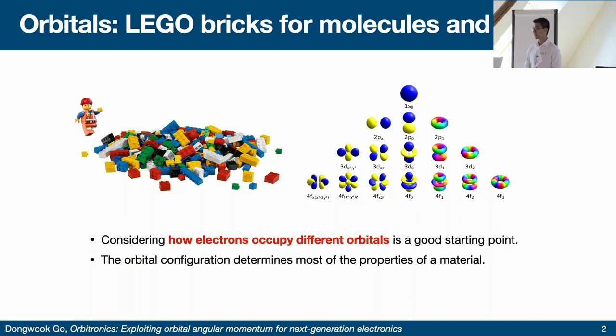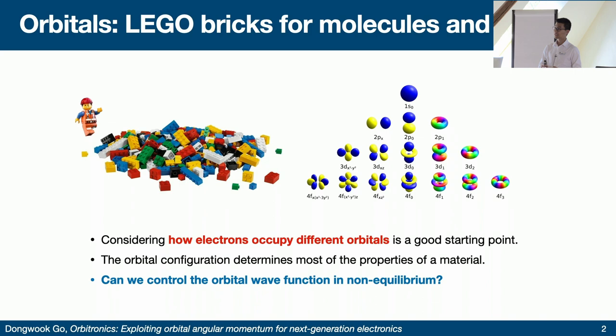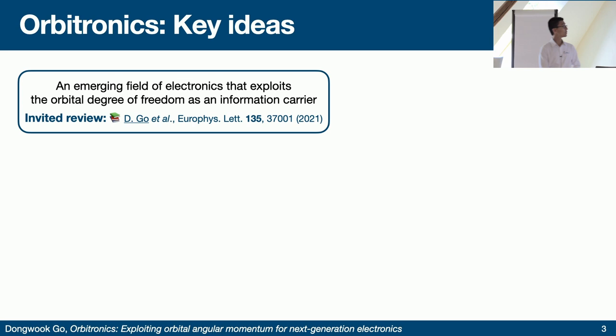This is not a new idea at all — it is very well known in chemistry and condensed matter physics. But we can ask a question that goes one step further: can we control the orbital wave function in non-equilibrium? If you think of Lego bricks as static objects, it's hard to imagine manipulating orbitals. But since these are quantum mechanical objects, we can think of inducing different hybridizations in non-equilibrium situations, and this is the very fundamental idea behind the field of orbitronics.